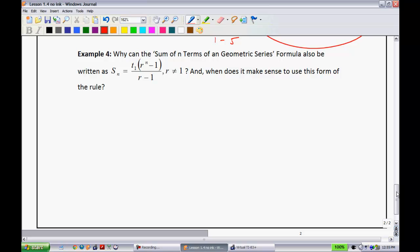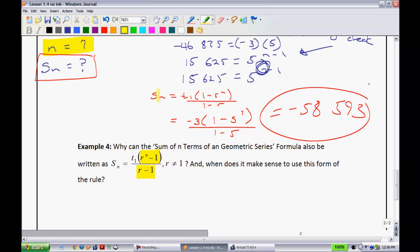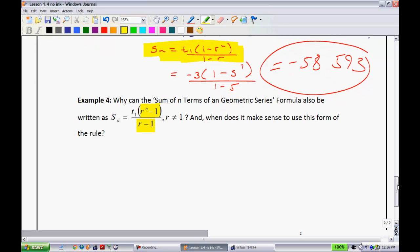Last question before we push on. It says, why can the sum of n terms of a geometric series formula also be written the same way, only if you notice right here, this has been reversed and that has been reversed. If I compare this up to this equation right here, you guys see that the only thing that's changed is that it has been reversed. So, why can it be written like that? And then I go on to ask the second question and why does it make sense to use this form of the rule? Well, let's answer the first question first.